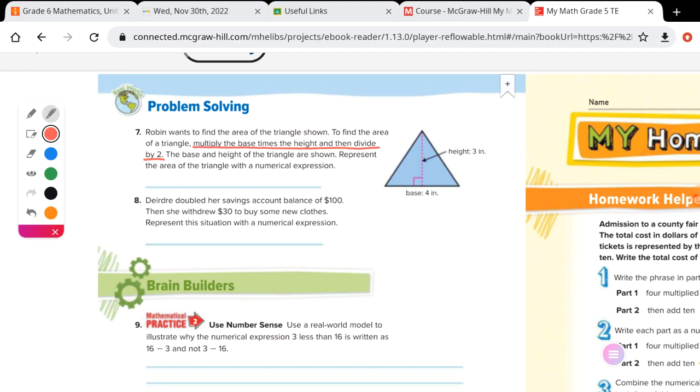The base and the height of the triangle are shown. Represent the area of a triangle with a numerical expression, which means you're giving an answer as a math sentence, you're not finding that like the area is 30 square feet or 30 square yards. Callie, how am I going to start? Four times three. Okay, why are we starting with four times three? Okay, because the base is four and the height is three, and it says multiply the base times the height.